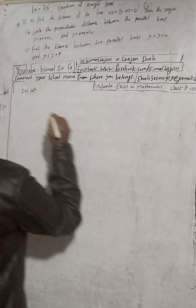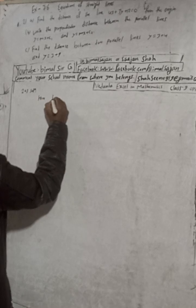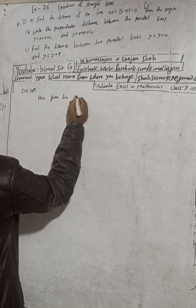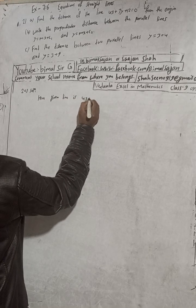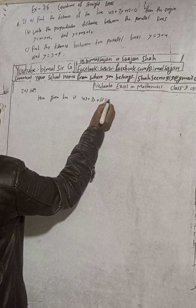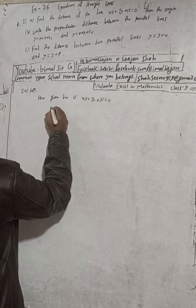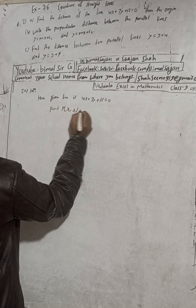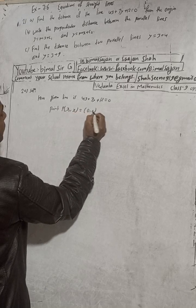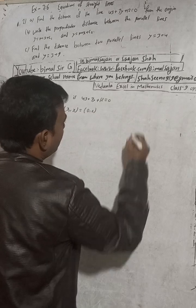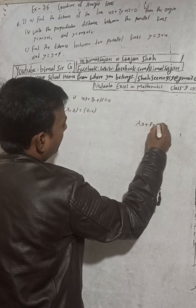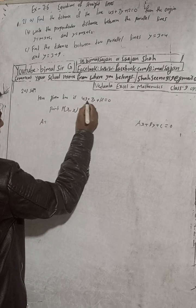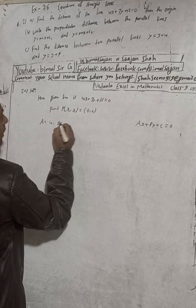Solution: The given line is 4x plus 3y plus 12 equals 0, and the point P is the origin where x1, y1 is 0 comma 0. Now equate this line with ax plus by plus c equals 0. Comparing, a equals 4, b equals 3, and c equals 12.